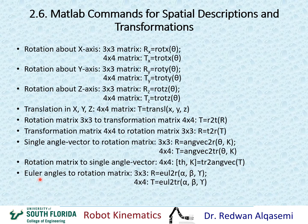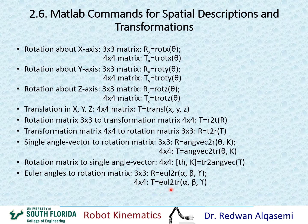If you'd like to convert from Euler angles to a rotation matrix, giving you a 3x3 result, then you can use eul2r. The three arguments are the alpha, beta, and gamma angles. If you'd like a 4x4 transformation matrix instead, then you can use eul2tr with the same alpha, beta, and gamma arguments. The translation portion will be 0, 0, and 0.